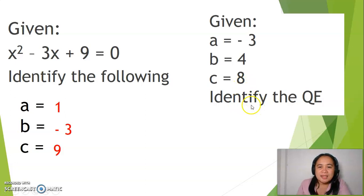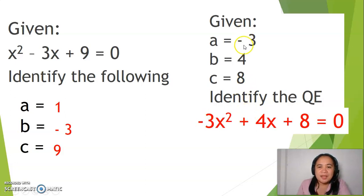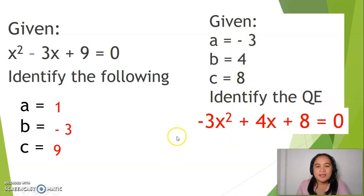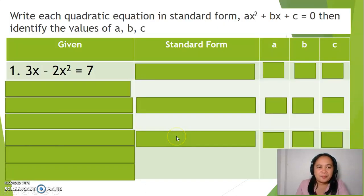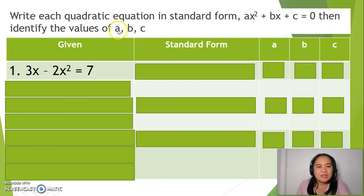In this case, the answer is negative 3x squared plus 4x plus 8 equals 0. Now, rewrite this to standard form and identify the values for a, b, and c.